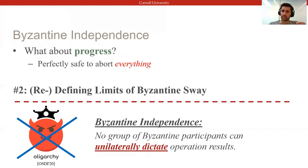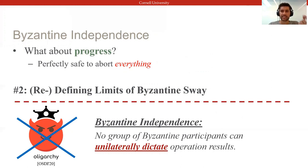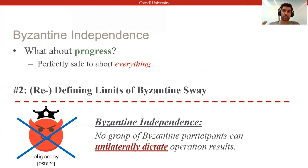To address this, we introduce a second, more general BFT system property that we call Byzantine independence. It states that no group consisting of only Byzantine participants should be able to single-handedly decide the outcome of our operations.